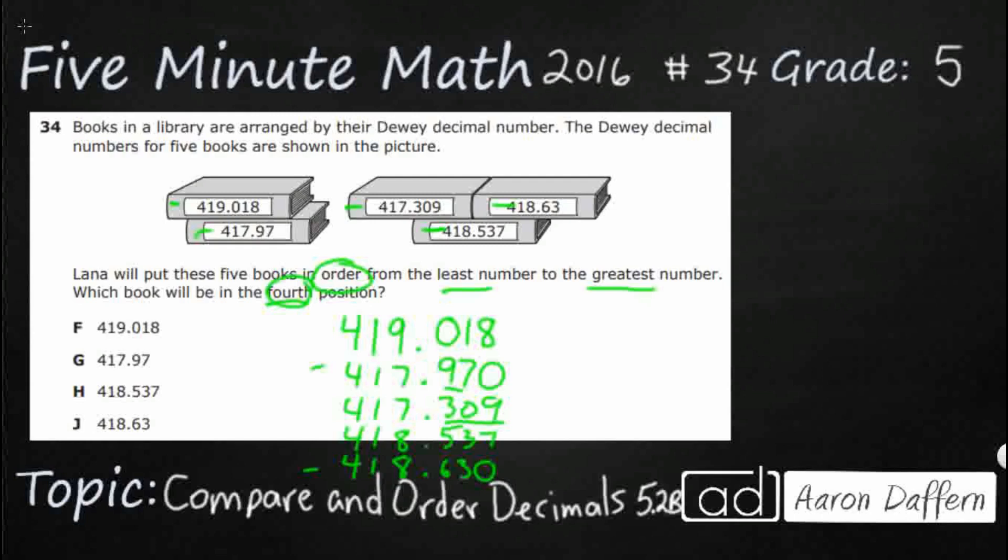So let's put these in order from least to greatest. All right, so they all have a four in the hundreds place. They all have a one in the tens place. In the ones place, I've got 97788. So I'm going to deal with my two sevens first right here. But they're both 417, so I can at least do that. 417, 417.